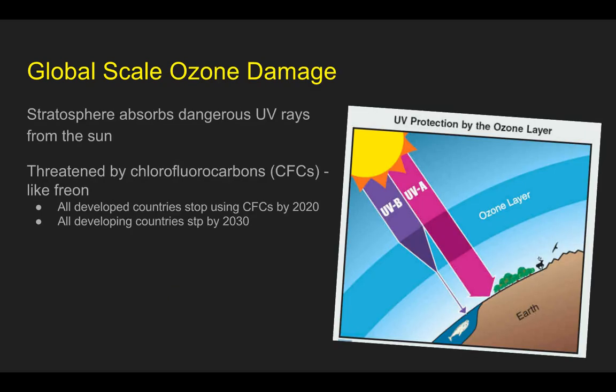Global scale ozone damage. The stratosphere is the layer of our atmosphere that absorbs dangerous UV rays from the sun. It is threatened by chlorofluorocarbons, or CFCs. Back when I was a kid, they had this thing called Freon, which was the big damager of the stratosphere — of the ozone layer.